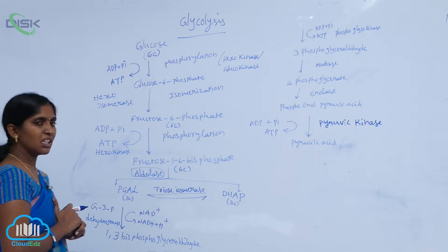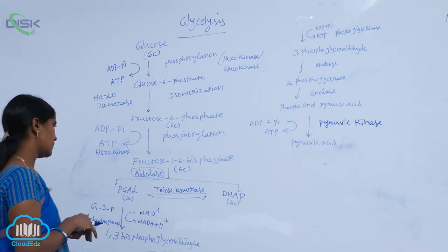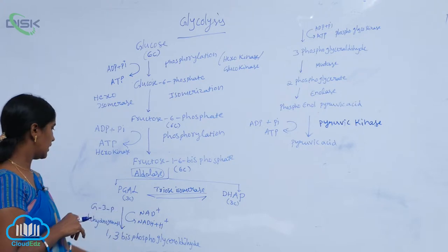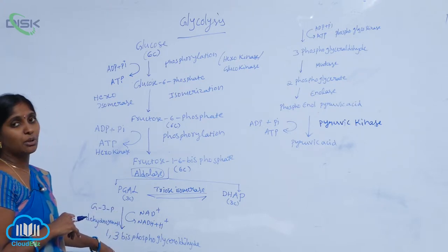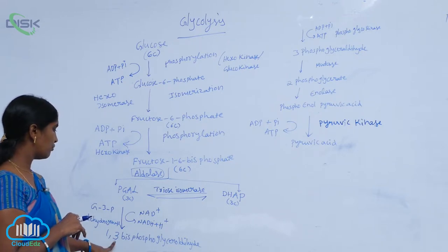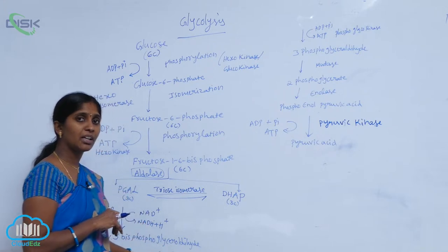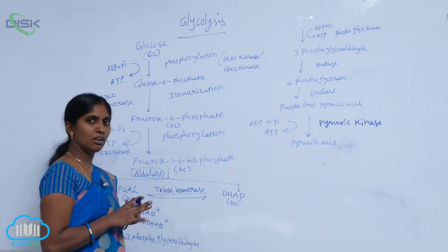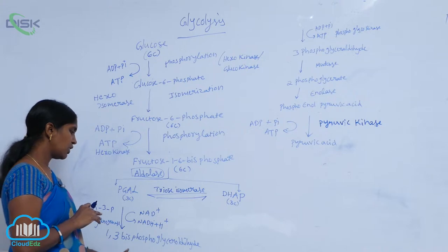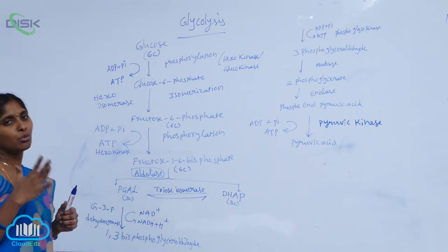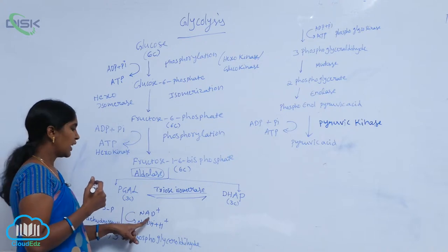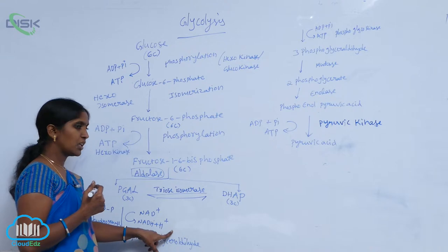PGAL, that is glyceraldehyde-3-phosphate, is involved in the glycolysis steps. It undergoes a dehydrogenation reaction, resulting in the production of 1,3-bisphosphoglycerate. So glyceraldehyde-3-phosphate is oxidized into 1,3-bisphosphoglycerate by losing two hydrogen molecules, which are absorbed by NAD+, reducing it to NADH2.